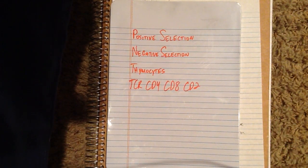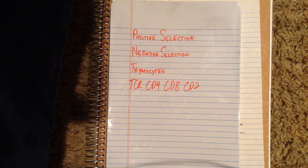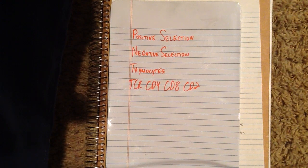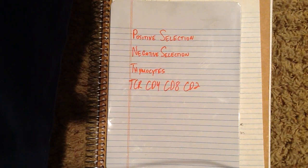Once these thymocytes reach the thymus, they're going to undergo proliferation or rapid reproduction. But most of the cells that enter the thymus will die by committing apoptosis anyway, but we're going to dive more into that in a bit once we get to positive and negative selection.